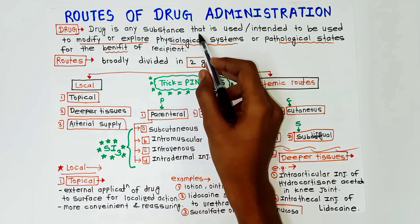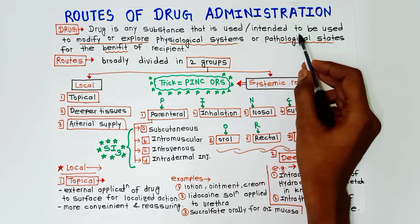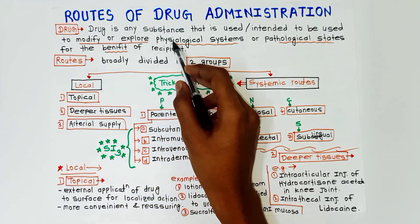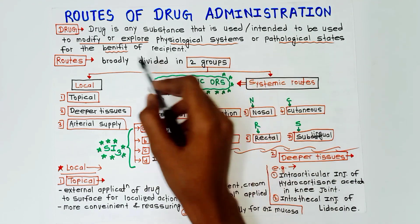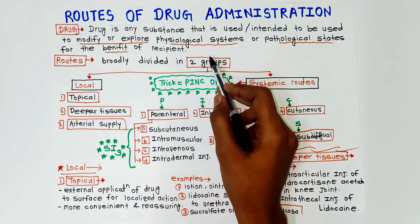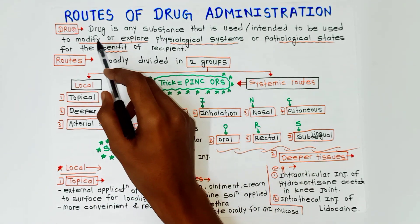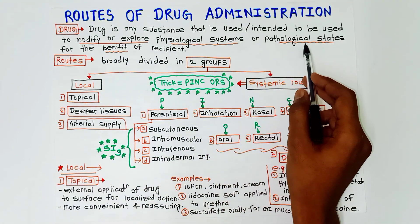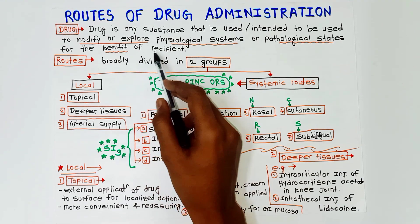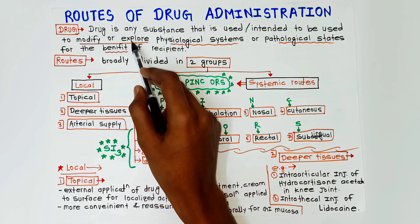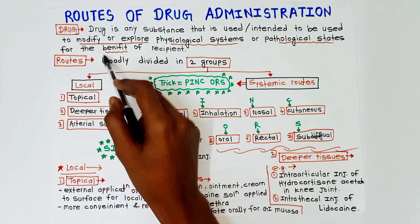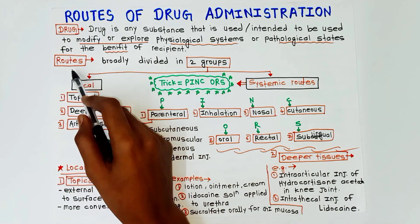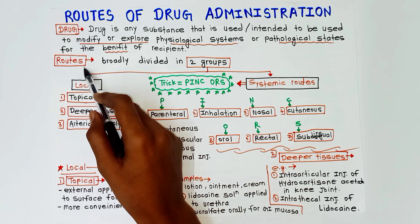First, the definition of drug: drug is any substance that is used or intended to be used to modify or explore physiological systems or pathological states for the benefit of recipient. These are the important words that must be present in your definition: modify or explore physiological systems or pathological states for the benefit of recipient.